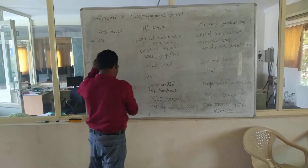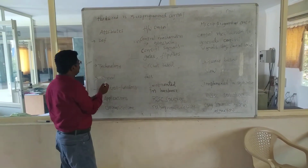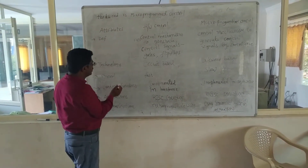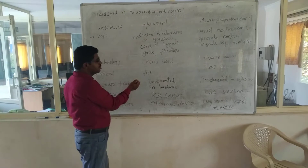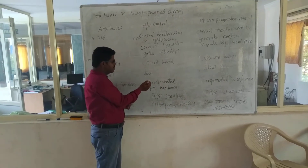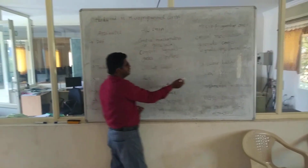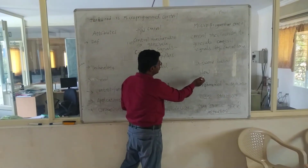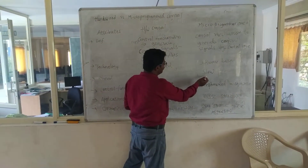The next parameter is speed. Hardware control is always fast, whereas microprogrammed control is slow.